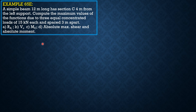A simple beam 12 meters long has section C, 4 meters from the left support. Compute the maximum values of the functions due to 3 equal concentrated loads of 15 kilonewtons each, spaced 3 meters apart.